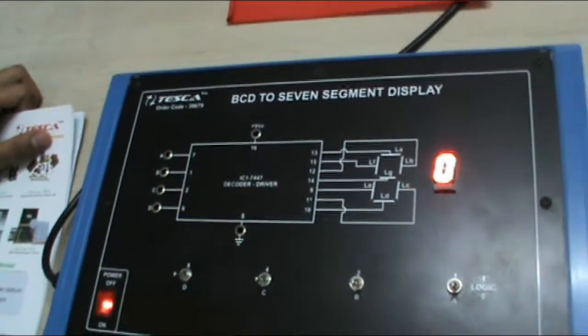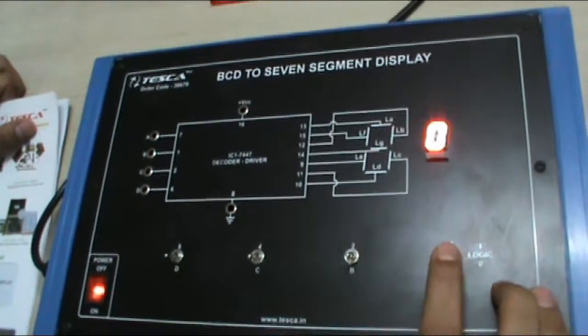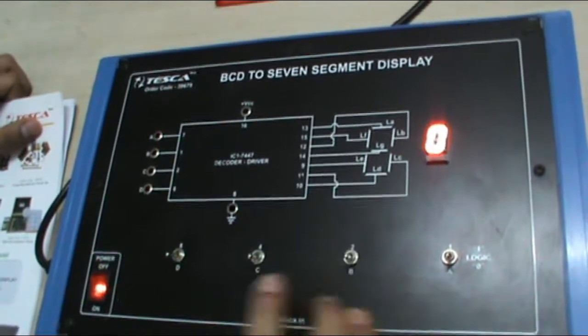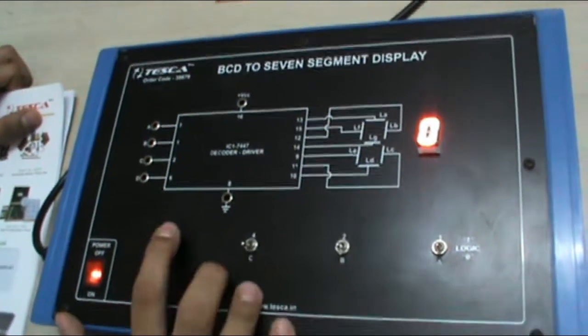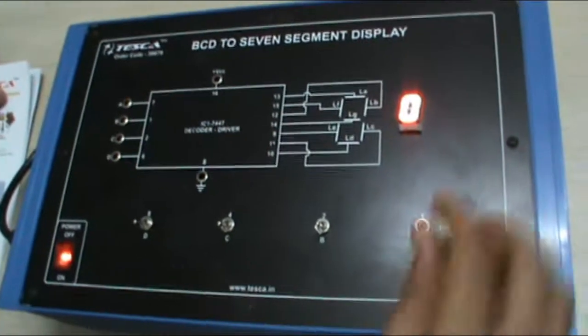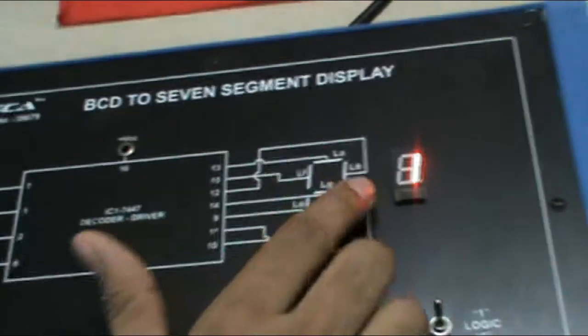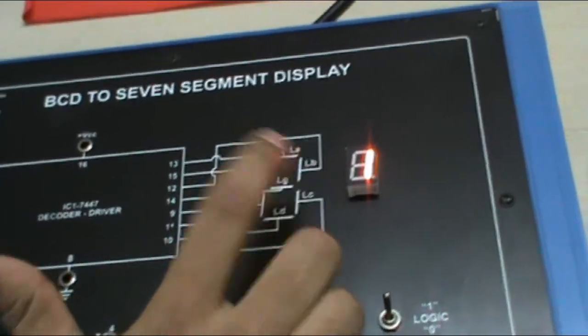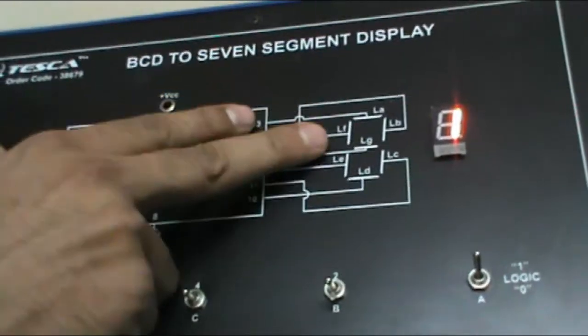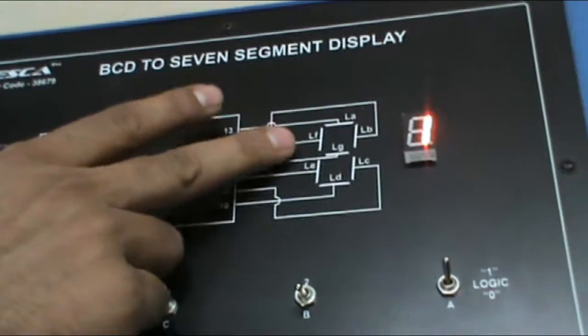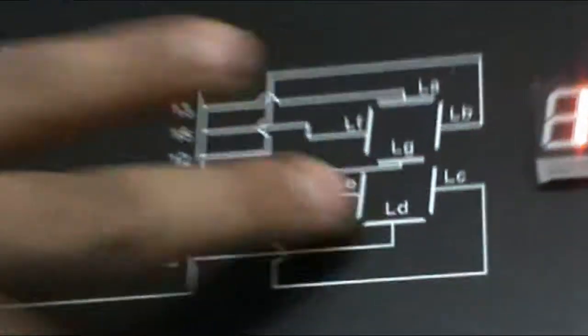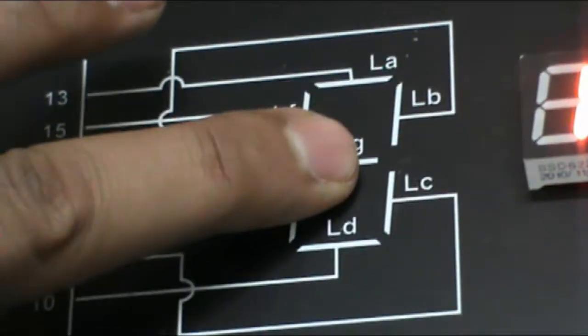These 4 inputs have certain values. A has value 1, B has 2, C has 4 and D has 8. Now in order to display 1 on the 7 segment display, as you know the 7 segment display is made up of 7 points as shown on the figure on the equipment: A, B, C, D, E, F and the middle one is G.